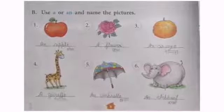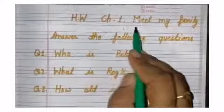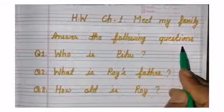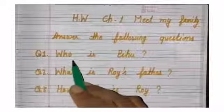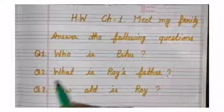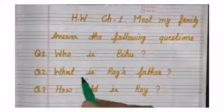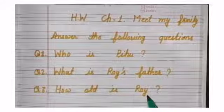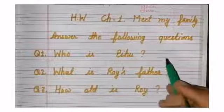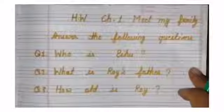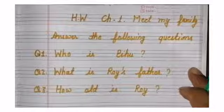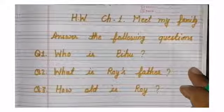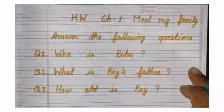Homework. Chapter no.1, Meet my family. Answer the following questions. Question no.1, Who is Pihu? Pihu kaun hai? Question no.2, What is Roy's father? Question no.3, How old is Roy? You have to answer these three questions in your rough notebook with your pencil. Okay. Sundar sundar you have to write neat and clean then I will give you remarks.